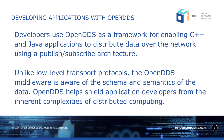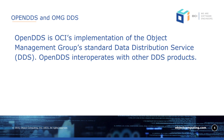Developers use Open DDS as a framework for enabling C++ and Java applications to distribute data over the network using a publish-subscribe architecture. Unlike low-level transport protocols, the Open DDS middleware is aware of the schema and semantics of the data, helping shield application developers from the inherent complexities of distributed computing. Open DDS is OCI's implementation of the Object Management Group's standard Data Distribution Service, or DDS, and it interoperates with other DDS products.